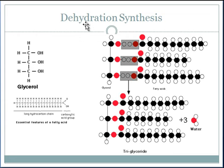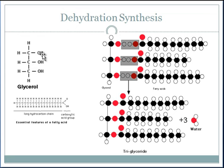Dehydration synthesis is the process of putting monomers together to make polymers. The most abundant lipid inside the human body is something called a triglyceride. A triglyceride is the polymer that results from a glycerol molecule bonding with three different fatty acid chains. As each fatty acid chain joins to the glycerol molecule, one molecule of water is formed. With the formation of one triglyceride, you can make three waters.